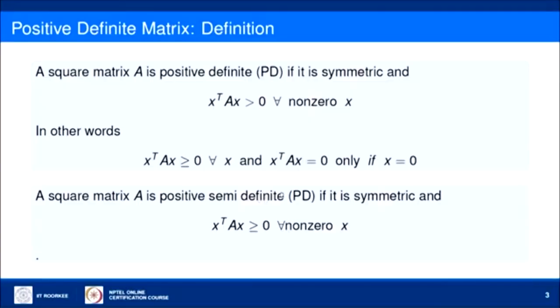A square matrix A is positive semi-definite, or PSD in short, if it is symmetric and x transpose A x is greater than or equal to 0 for all non-zero x. The only difference between positive definite and positive semi-definite is that for PD it is strictly greater than 0 for non-zero x, whereas for PSD it may be 0 also.